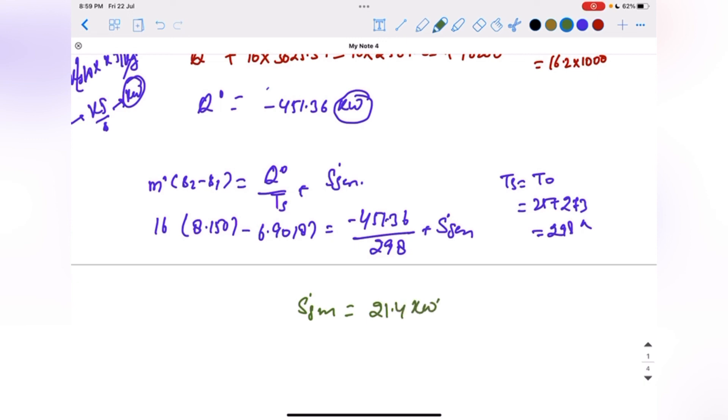So this is the final answer. Remember, this should always be greater than zero. It can never be negative. If this is negative, then the process will not be possible.